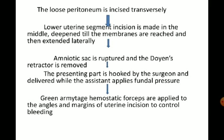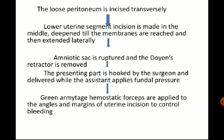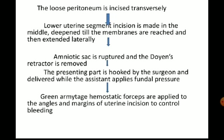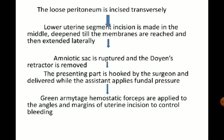The loose peritoneum is incised transversely. The incision on the lower uterine segment is made in the midline, deepened until the membranes are reached, and then extended laterally. With the help of a scalpel, a nick is made over the lower segment. We then stretch laterally with both hands and fingers to extend the incision to 9–10 cm, taking care to avoid rupture of lateral vessels.